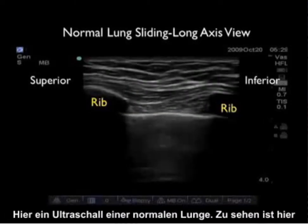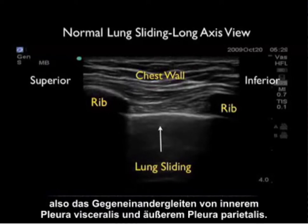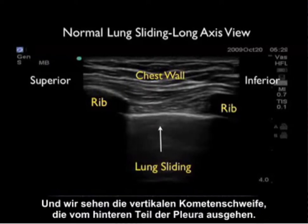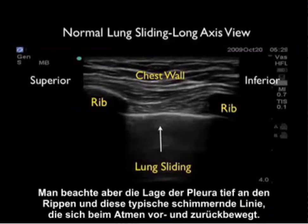Here's a nice ultrasound image showing a normal lung. We're in the long axis configuration, so the superior rib is to the left, inferior rib to the right. Chest wall anteriorly, and we see here the lung sliding, which is the opposition of the outer parietal and the inner visceral pleura, and we see the vertical comet tails coming off the back of the pleura. This is a completely normal exam — no pneumothorax. Note the location of the pleura, deep to the ribs, and that classic shimmering line back and forth as the patient takes a breath.